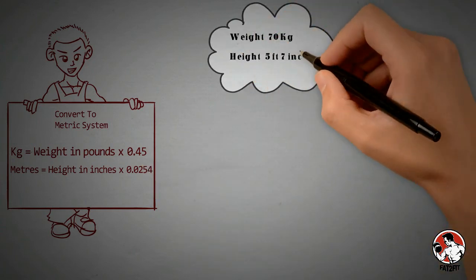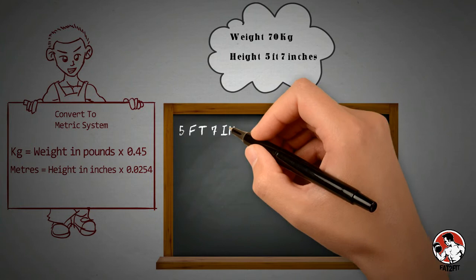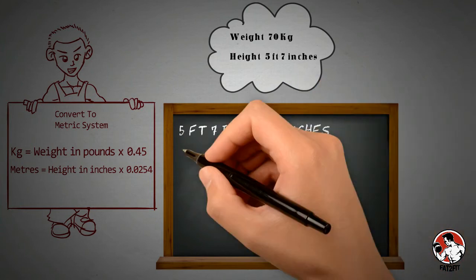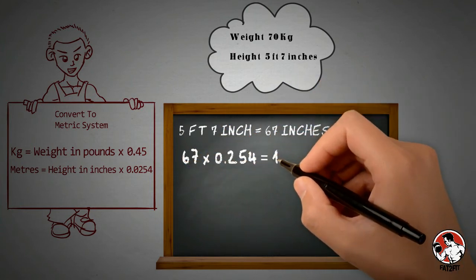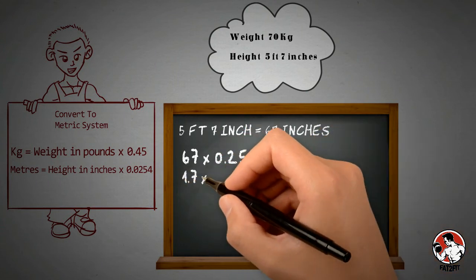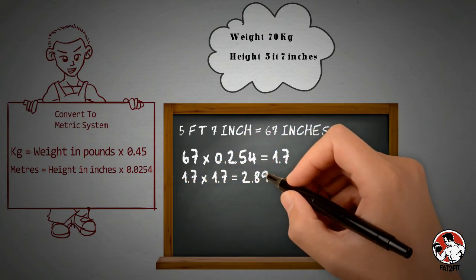Let's say you are 70 kilograms and 5 foot 7 inches tall. 5 foot 7 inches is equivalent to 67 inches which when multiplied by 0.254 yields 1.7. Multiplying 1.7 by itself gives 2.89.